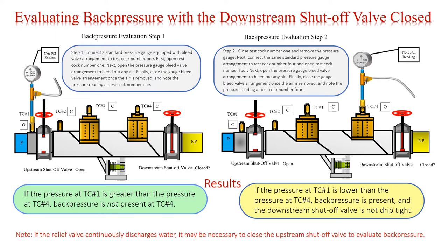Evaluating back pressure with the downstream shutoff valve closed. Back pressure evaluation step one: connect a standard pressure gauge equipped with a bleed valve arrangement to test cock number one. Open test cock number one. Next, open the pressure gauge bleed valve arrangement to bleed out any air. Finally, close the gauge bleed valve arrangement once the air is removed and note the pressure reading at test cock number one. Back pressure evaluation step two: close test cock number two. Close test cock number one and remove the pressure gauge. Connect the same standard pressure gauge arrangement to test cock number four and open test cock number four. Open the pressure gauge bleed valve arrangement to bleed out any air. Close the gauge bleed valve arrangement once the air is removed and note the pressure reading at test cock number four.